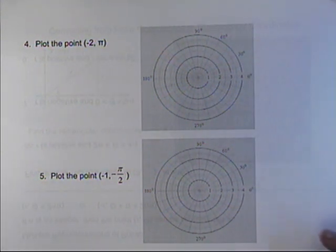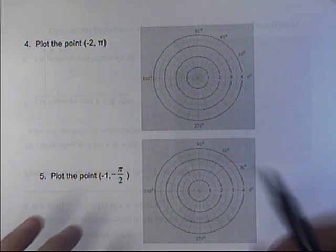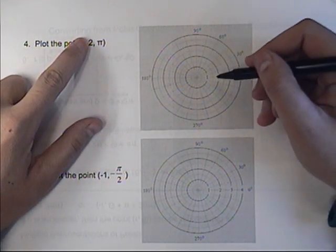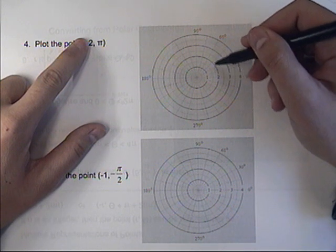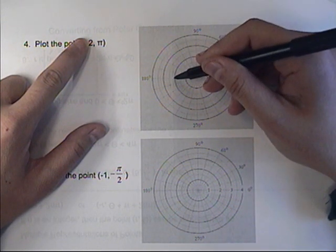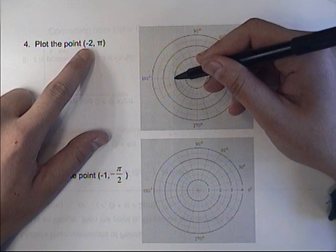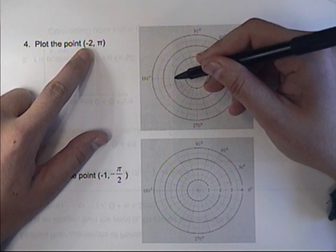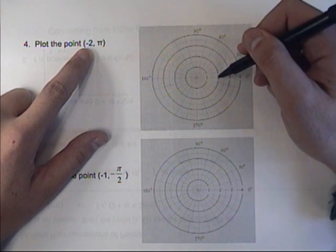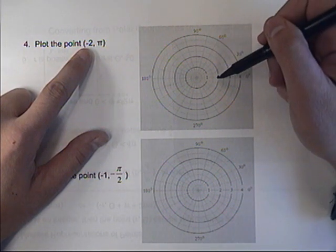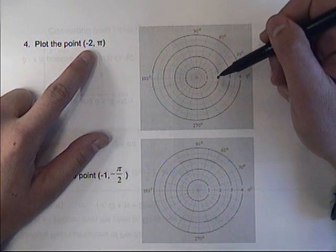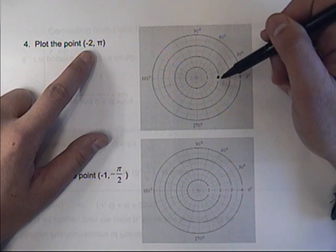Now, if you start with a negative radius, here is what I propose that you do. I propose that you rotate around first and then do a reflection. I'm going to pretend this says positive 2, so I'm going to go out to 2, then I'm going to go to π, which is exactly halfway around, and then I'm going to do a reflection. I'm going to reflect this point that's over here back to the other side.